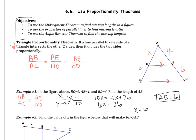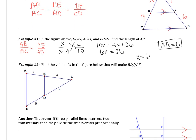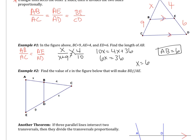This really shouldn't be new — we've done examples like this before, now I'm just giving the theorem a name. Example number two: find the value of X in the figure below that will make BD parallel to AE. This one's going to be tougher. Pause the video, set up the problem, and try to solve it. Good luck.